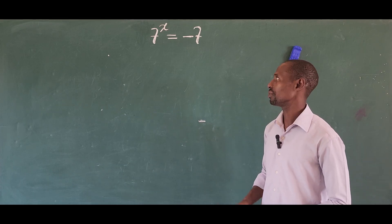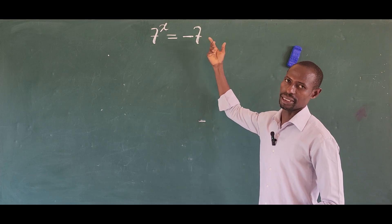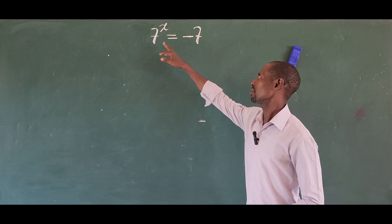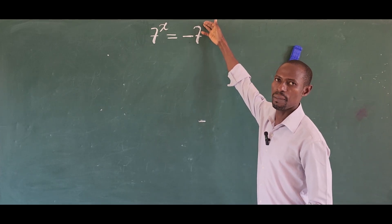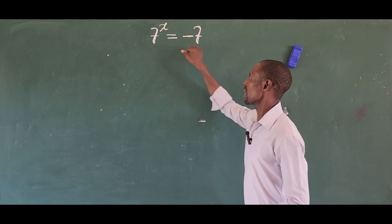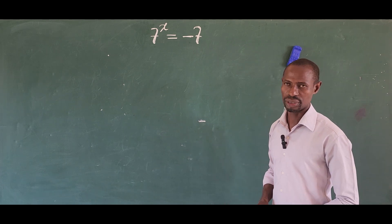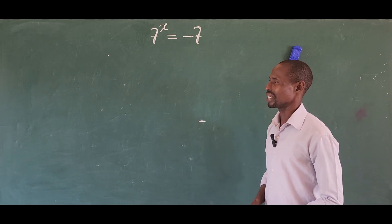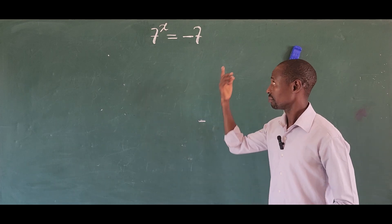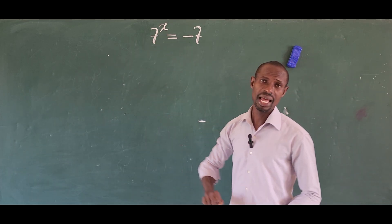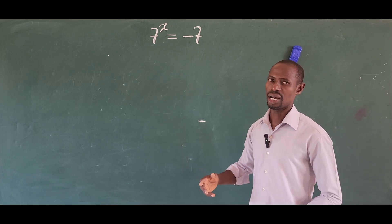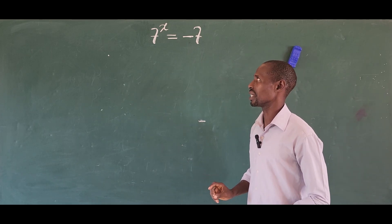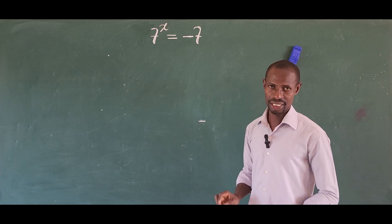If you look carefully, you'll discover that the quantity on the right-hand side is carrying a negative sign. So supposing there's no negative sign, we'd just put one up here, and since the bases are the same, that would give us one. But here we are having a negative sign on the right-hand side — so what number can we put in place of x that will actually equal minus 7?